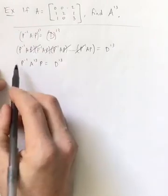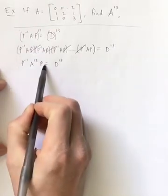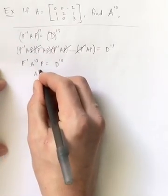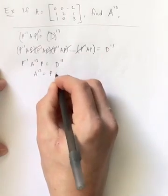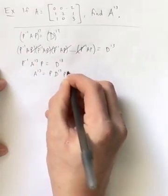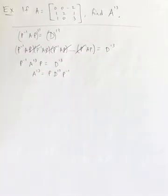So once I have that, I can just multiply by P on the left and P inverse on the right, and I will get A to the 13th equals P D to the 13th P inverse. Now, you know, you might look at this and say, well yeah, but I still have to do D to the 13th. But remember, a diagonal matrix to a power is easy because all I do is raise the entries on the main diagonal to that power.